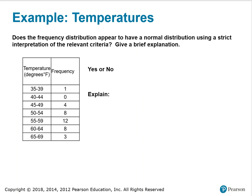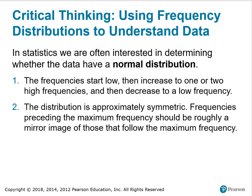For example, does the frequency distribution appear to have a normal distribution using a strict interpretation of the relevant criteria? Remember the relevant criteria: the frequencies start low, increase to one or two high frequencies, then decrease to a low frequency, and the distribution is approximately symmetric.